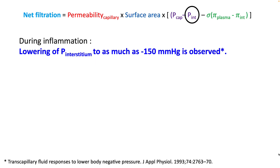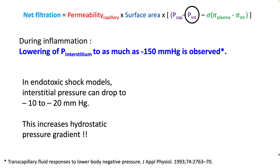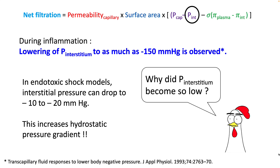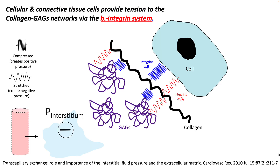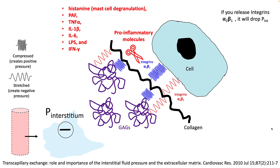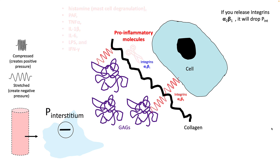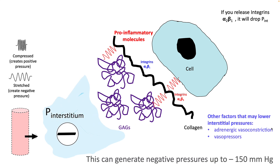Scientists have found that this is due to a drop in interstitial pressures. During inflammation, interstitial pressure can fall as low as minus 150 mmHg. In endotoxic shock models, interstitial pressure drops to at least minus 10 to minus 20 mmHg, increasing the hydrostatic pressure gradient and promoting edema formation. The reason interstitial pressure becomes so low during inflammation relates to the beta-1 integrin system. Pro-inflammatory molecules such as histamine, TNF-alpha, IL-6, and interferon gamma disrupt the activity of alpha-2 beta-1 integrin, and release of this integrin drops interstitial pressure and promotes edema formation.